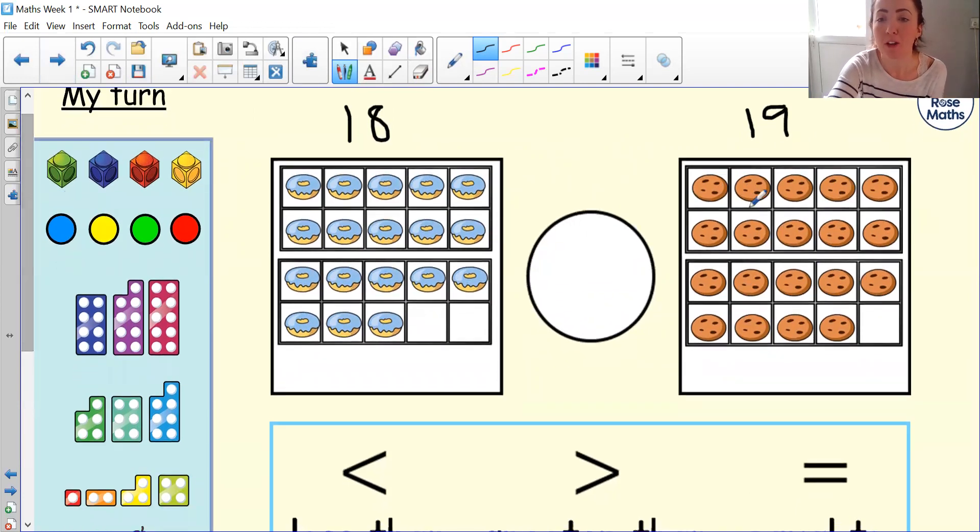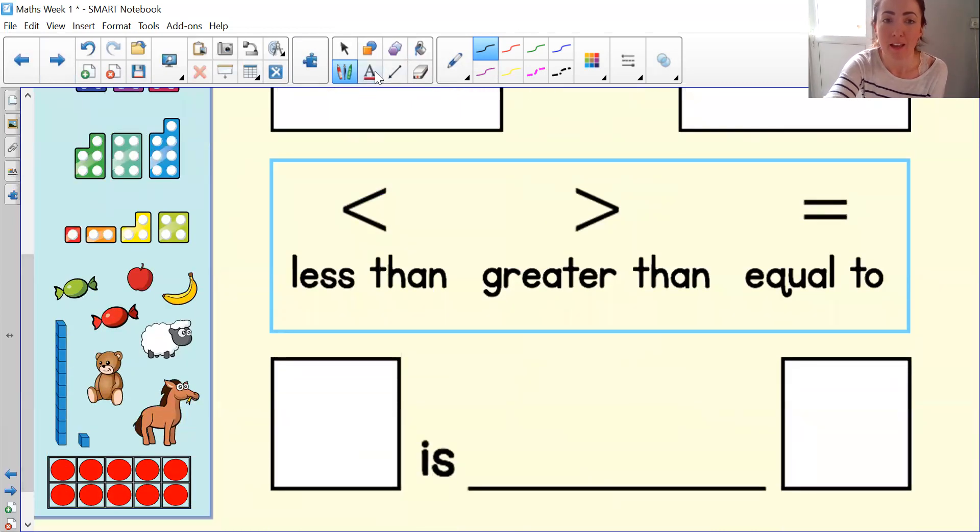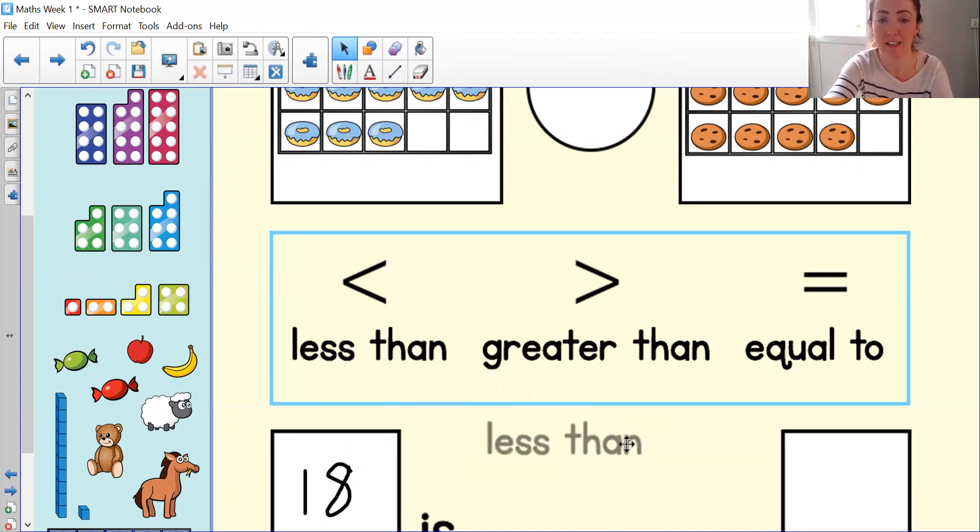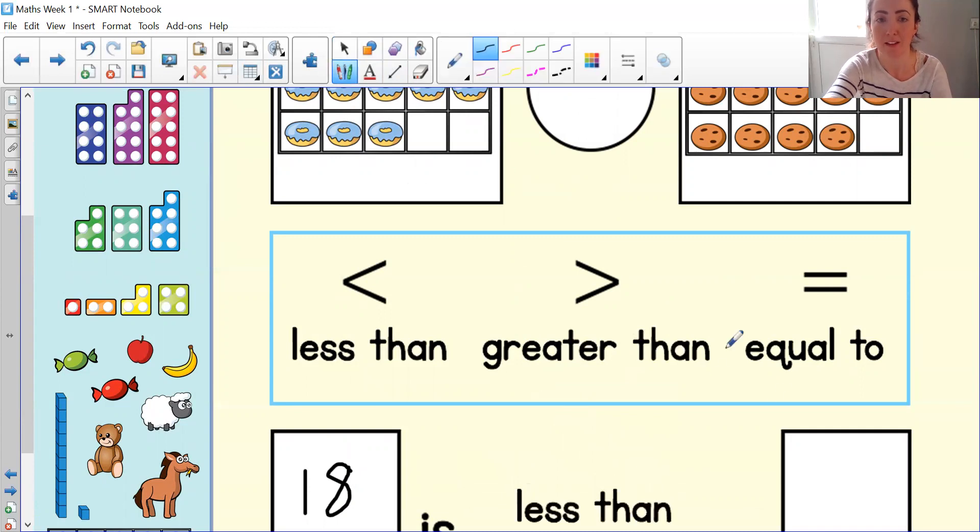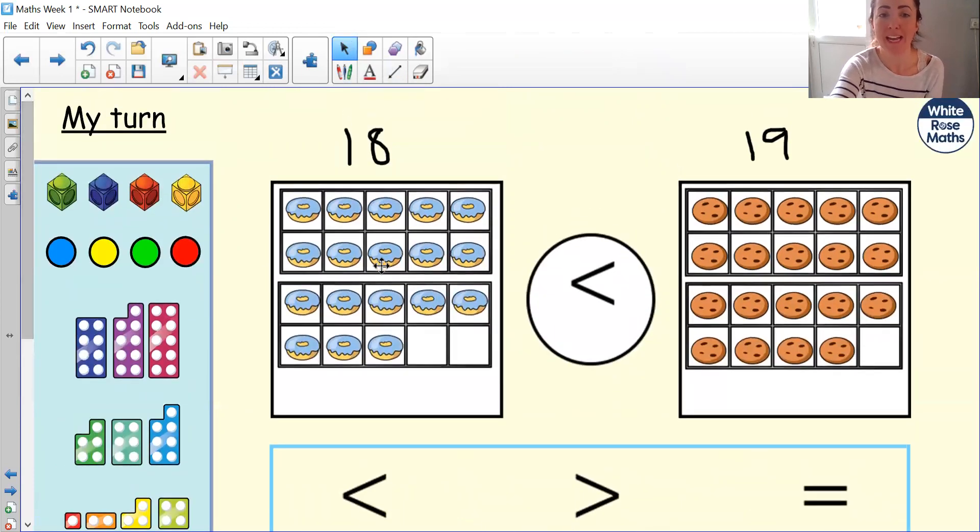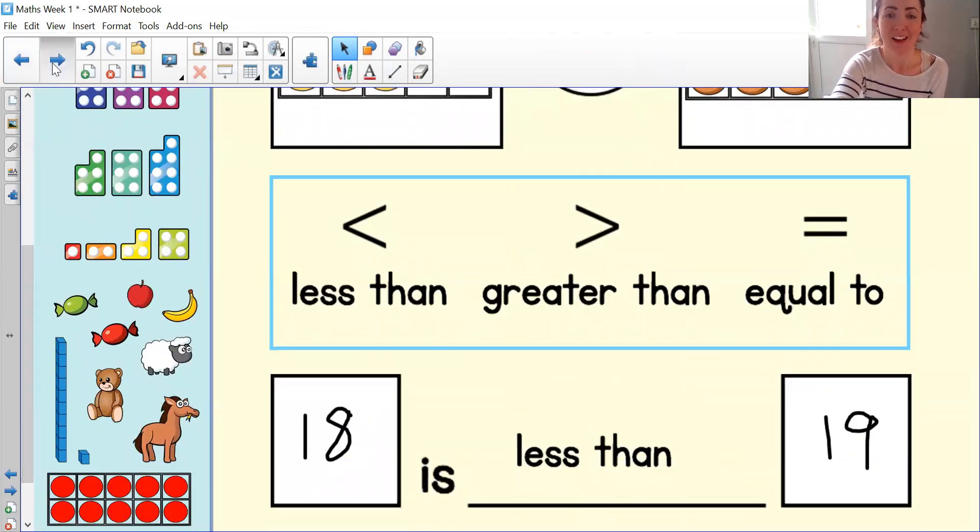I can see that because there are more cookies over here, that means that there are less donuts. So 18 donuts is less than 19 cookies. If I'm putting the correct symbol in there, I can use this symbol here because this symbol means less than. So 18 is less than 19 or 18 is fewer than 19. And there is the sentence as well.